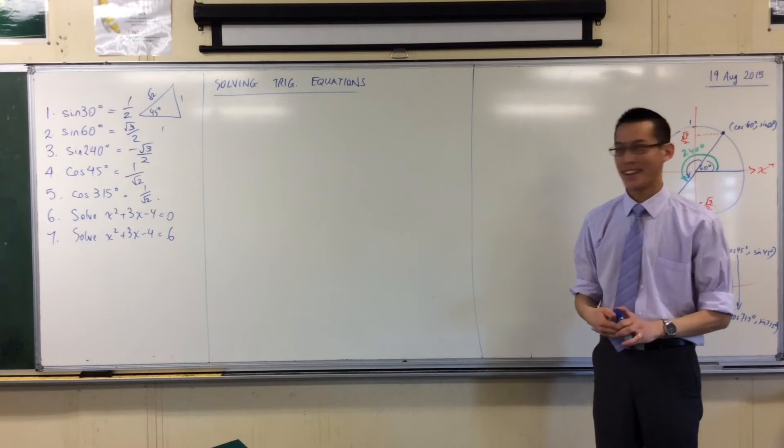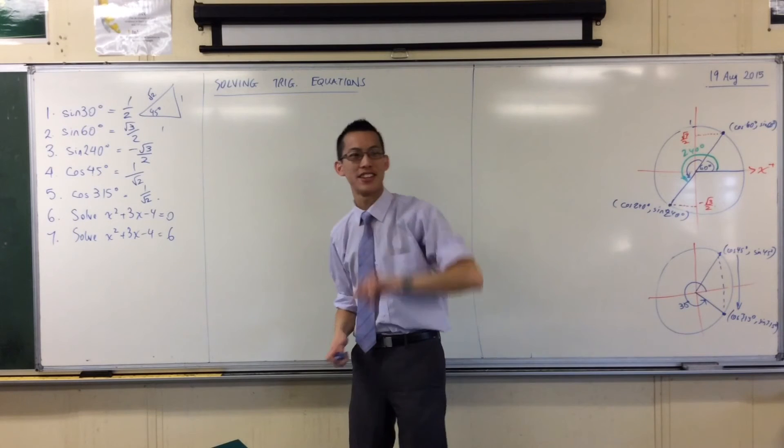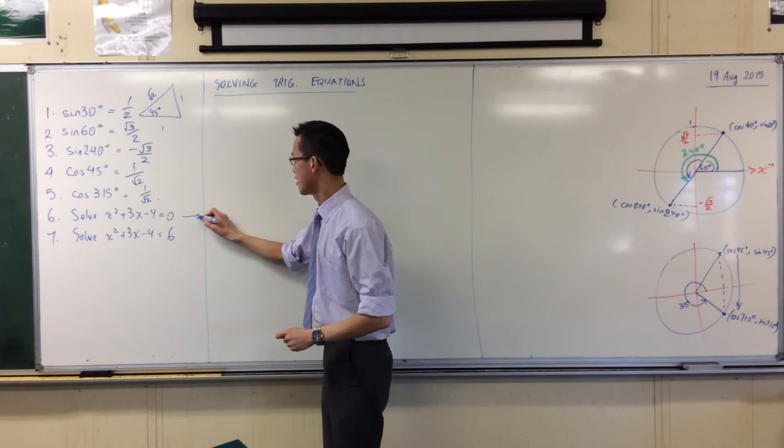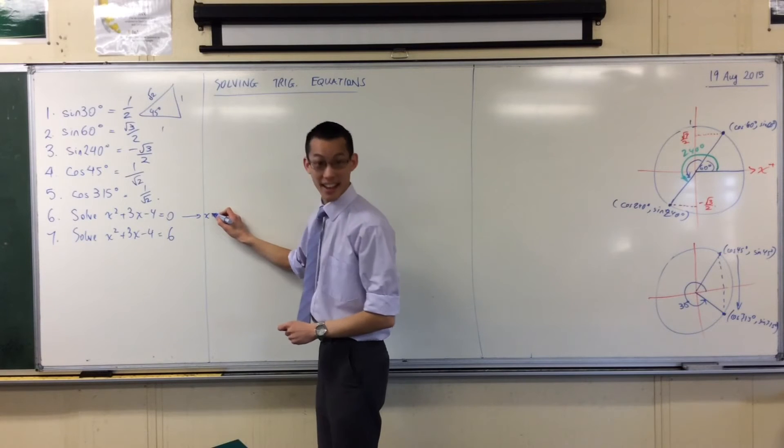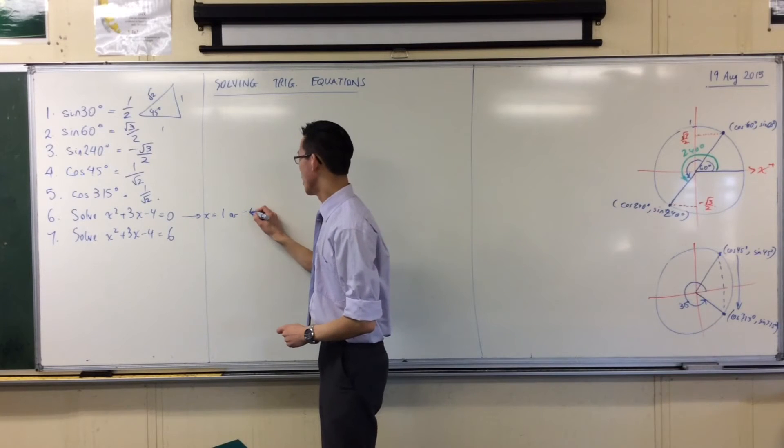Who's got some answers for 6 or 7, for those quadratics? Someone hasn't said anything yet? Someone has a good answer? X is 1, and the first value for x is 1, and then the second value is minus 4.